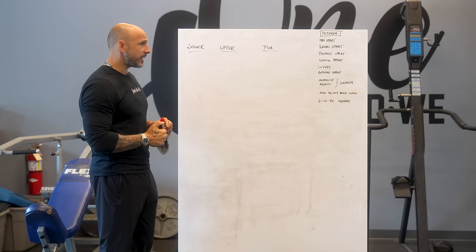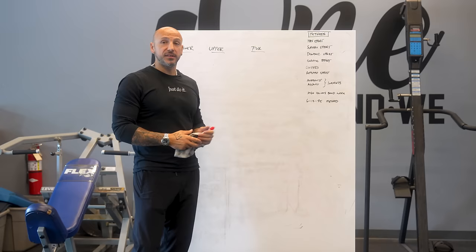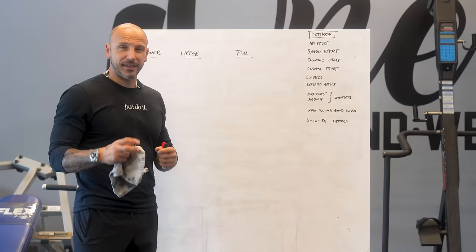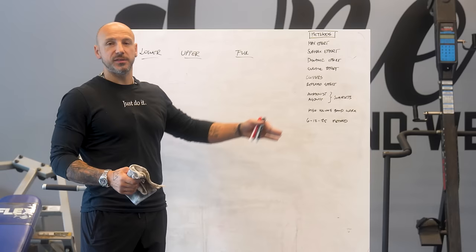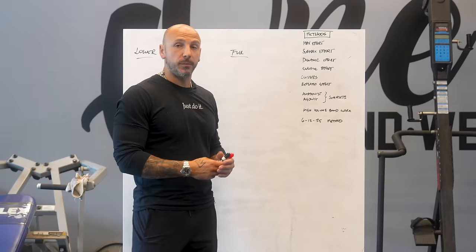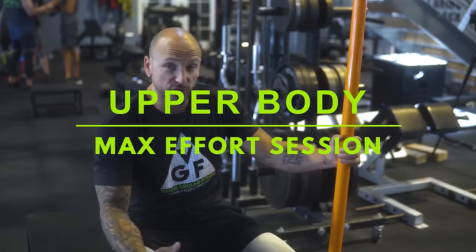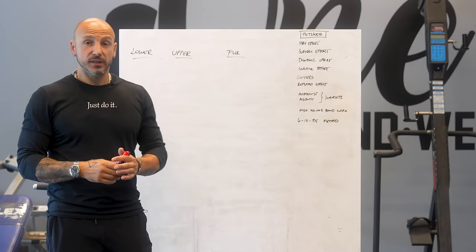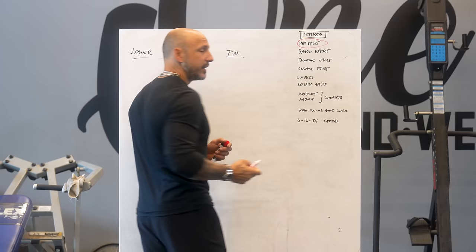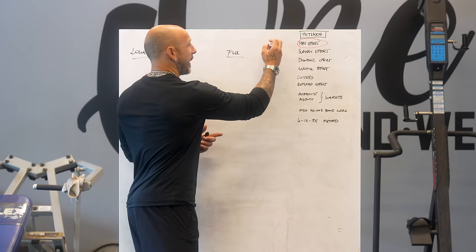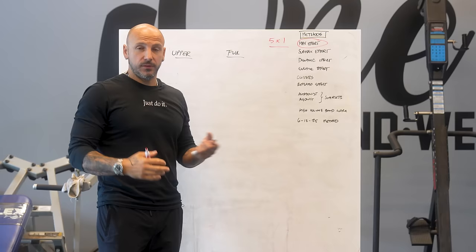Before we get into the example, let's touch on concurrent training and the different strength methods. Once we determine the template, we go into methods. Here are the main ones: Number one is the max effort method — this is where we're working up to a max, usually a one-rep max. For example, a five-times-one or six-times-one scheme where through five ramping sets we get to a top set of one for that day.